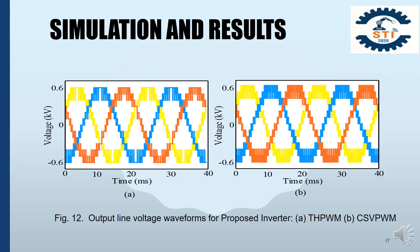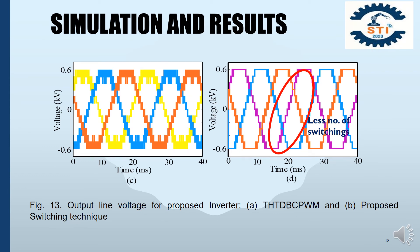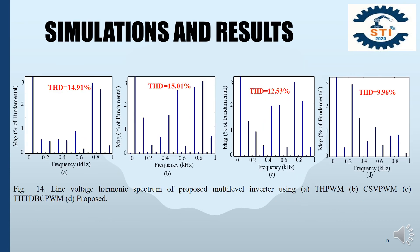Figure 12 shows the output line voltage waveform for the proposed inverter topology using CHPWM and CHVPWM techniques. Figure 13 shows the output line voltage waveform for the proposed inverter using CHPWM and the proposed switching techniques. From this figure, it is seen that our proposed modulating signal generates a less number of switchings, which ensures less switching losses. Figure 15 shows the output line voltage waveform for the proposed inverter using CHPWM, CHVPWM, CHTDBCPWM, and proposed switching techniques. From this figure, it is seen that our proposed switching technique offers less THD.